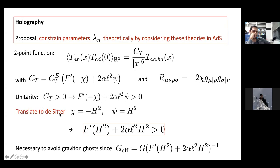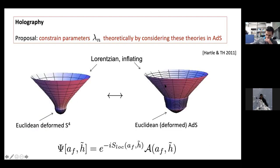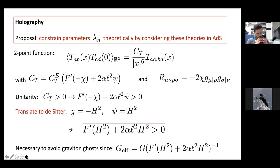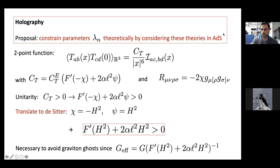Now we translate this to de Sitter. Classically you could think of this as a continuation from AdS to de Sitter; quantum mechanically it amounts to calculating the wave function not at the boundary of the Euclidean AdS regime but higher up, where we glue an additional complex phase matching onto the inflating universe. When we do that we arrive at a constraint, and strikingly in de Sitter and therefore in inflation this is a very physical constraint: it says nothing else than that the effective Newton constant must remain positive. We would rather restrict to theories where that is the case.